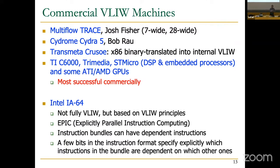Intel developed the IA-64 architecture — 64-bit, completely redesigned, based on VLIW principles. It's called Explicitly Parallel Instruction Computing (EPIC). There are bits in the instruction format that specify explicitly which instructions in the bundle are dependent. In the end this was not successful — Intel is no longer developing these processors. AMD instead developed x86-64, which just adds 64-bit extensions to x86 without changing the execution model, and Intel had to adopt it because of the massive existing x86 software base.